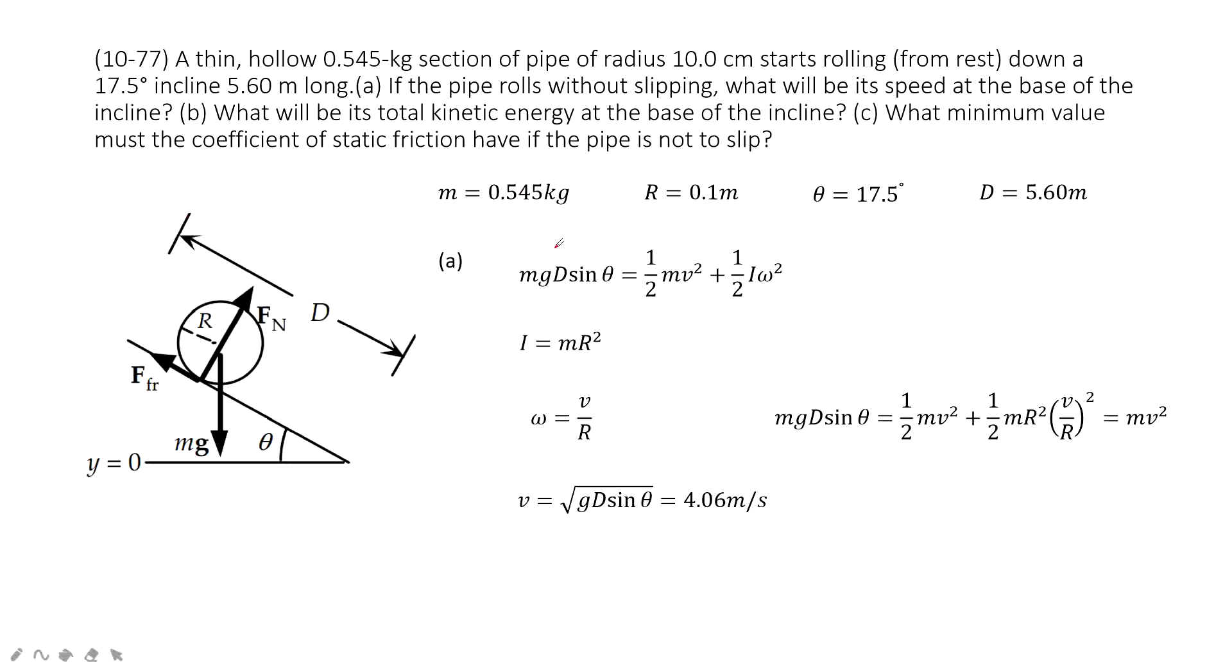So for this one, it's simple. We just consider the energy is conserved. So initially, the energy is mgD sin theta. Of course, because initially it is zero, and this length is D, and this is angle theta. So distance from the initial position to the reference point is D sin theta, right? So the initial potential energy is mgD sin theta.